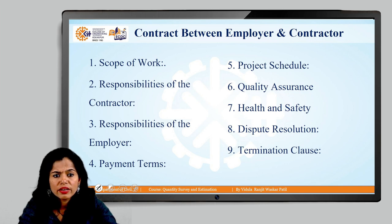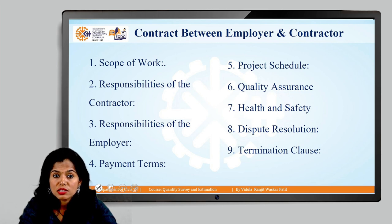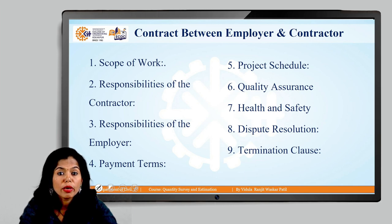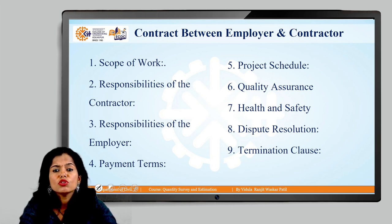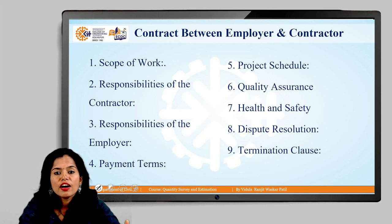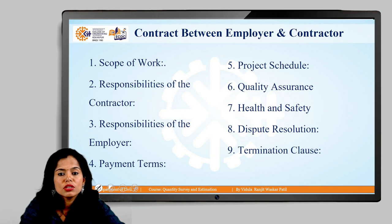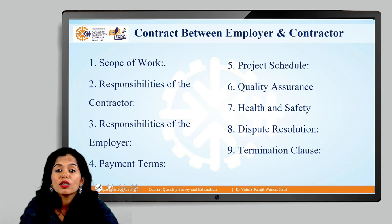The next contract, which we have seen in the tendering process up till now, is between the employer and the contractor, wherein the scope of work is mentioned. The responsibility of the contractor is mentioned in the general conditions, as is the responsibility of the employer. Payment terms, project schedule, quality assurance, health and safety, dispute resolution — that is arbitration — and the termination clause, how this contract comes to an end, are all mentioned in the general conditions and special conditions of the contract.